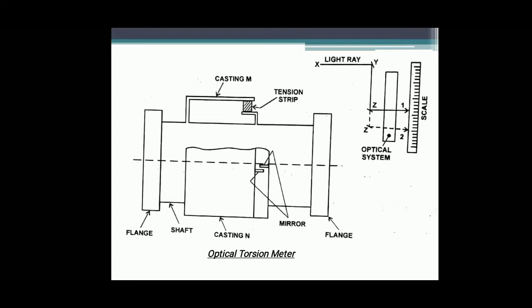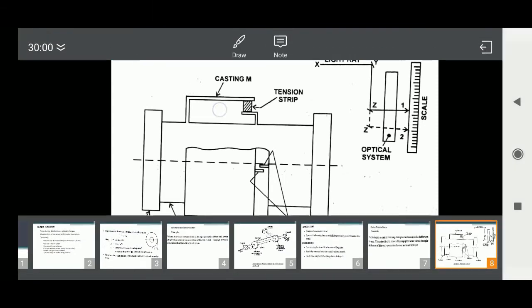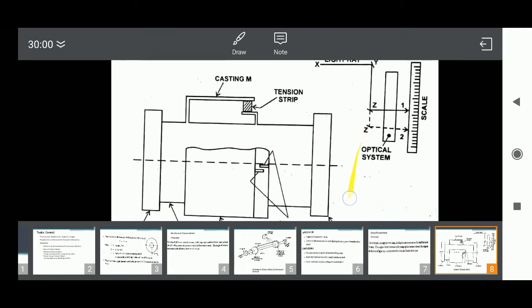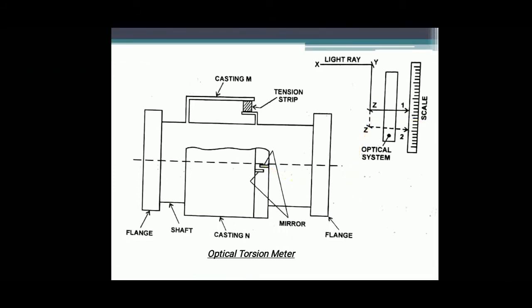Coming to the operation: when the shaft is transmitting torque, a relative movement occurs between castings M and N. Due to this, the mirrors will change position — a partial inclination between the two mirrors will occur because they are attached to the castings. As the mirrors are constantly made to reflect a light beam on the torque calibrated scale, due to the change in positions of the mirrors, there will be an angular deflection of the light trace which is measured by the torque calibrated scale. This angular deflection is proportional to the twist of the shaft, i.e., the relative movement of castings M and N, and hence the torque of the shaft. The optical torsion meter is used in steam turbines and IC engines.